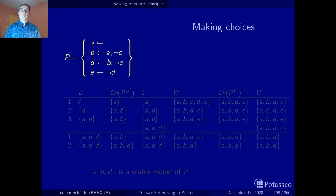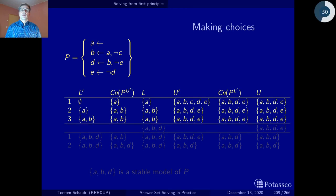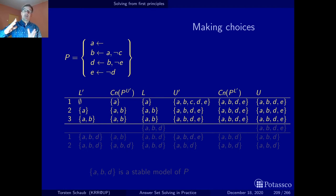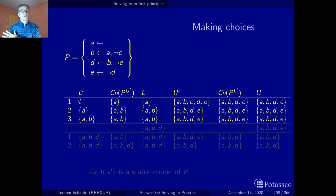Once our EXPAND algorithm terminates, it's all about choices. We figured out that A and B belong to the lower bound, and {A, B, D, E} is the upper bound — meaning A and B must be true, C must be false, and D and E are possible. Since we cannot compute further, we divide the set of stable models and pick an atom. I choose D. Making D true means adding it to the lower bound, while the upper bound already contains it. Now we launch EXPAND again with this new lower bound {A, B, D} and the upper bound.